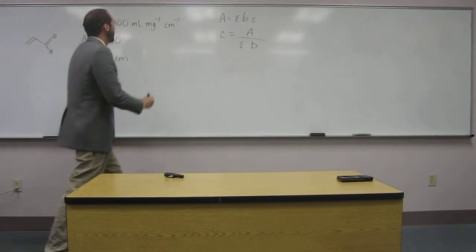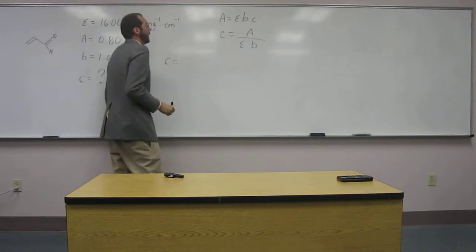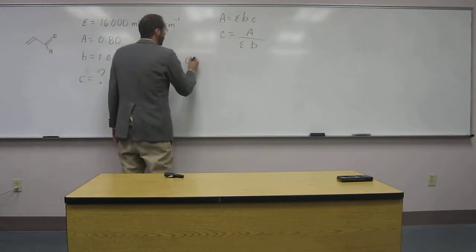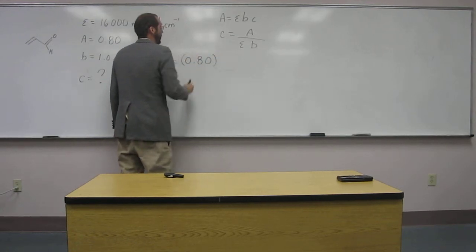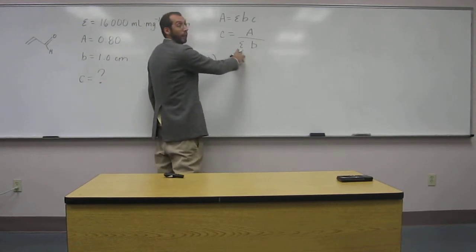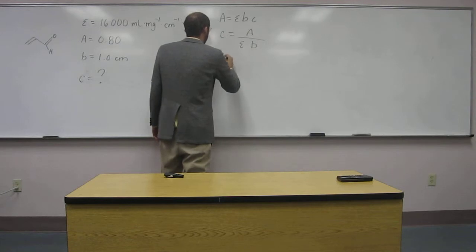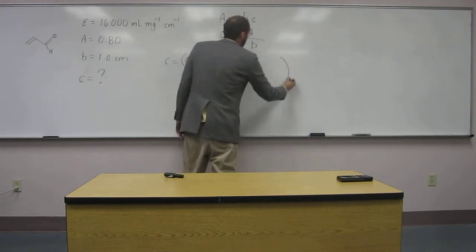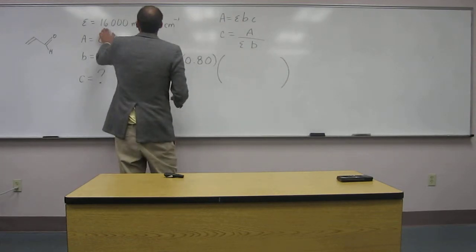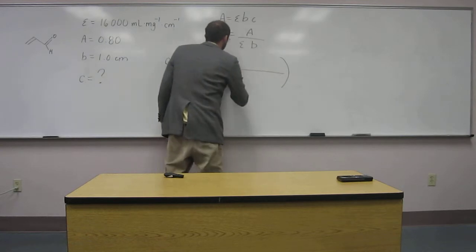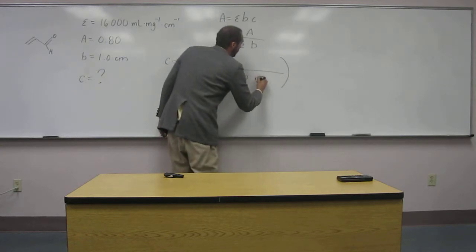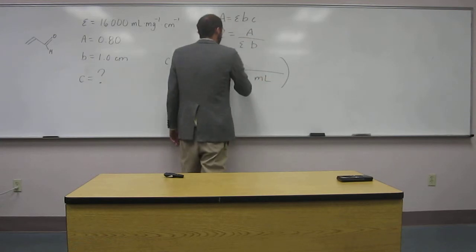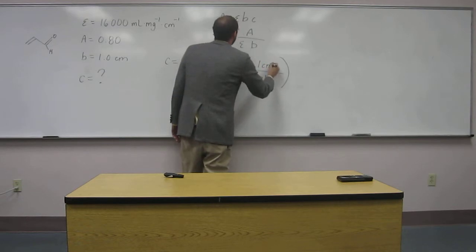So C is going to be, A is 0.80, so divided by epsilon, so epsilon is this. So 16,000 milliliters, and this is 1 milligram times 1 centimeter.